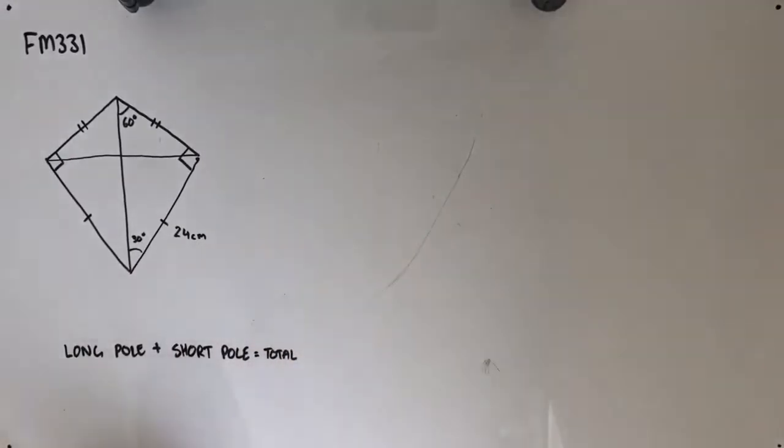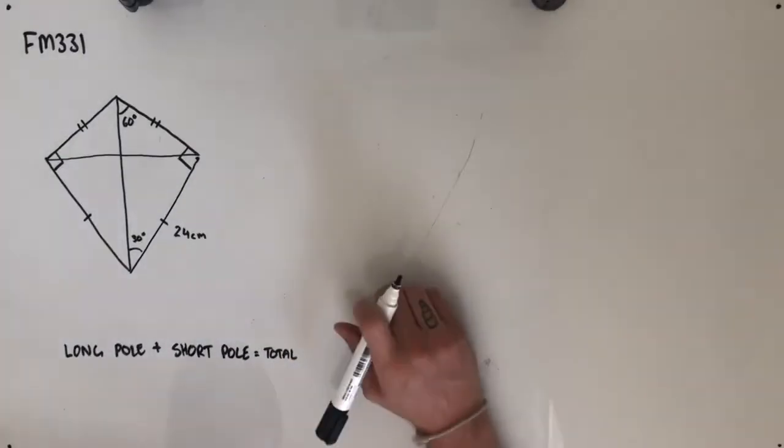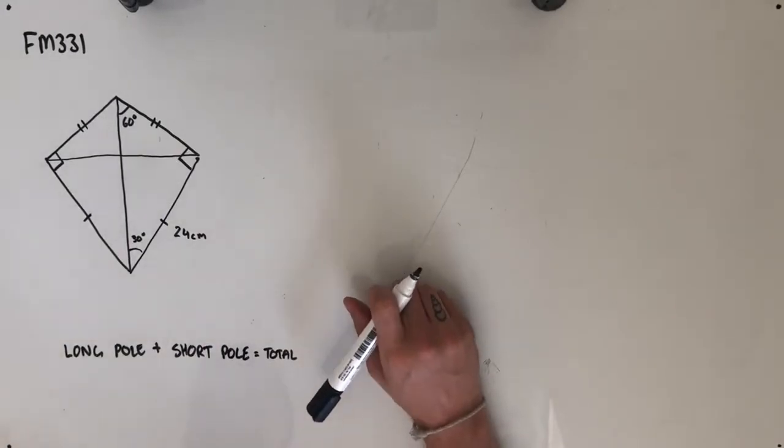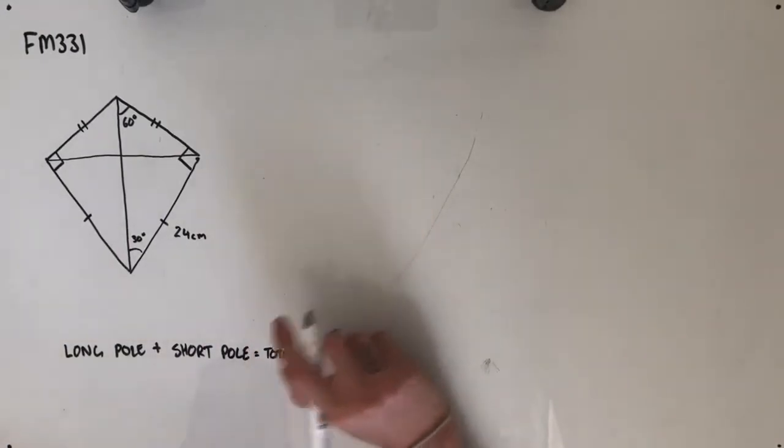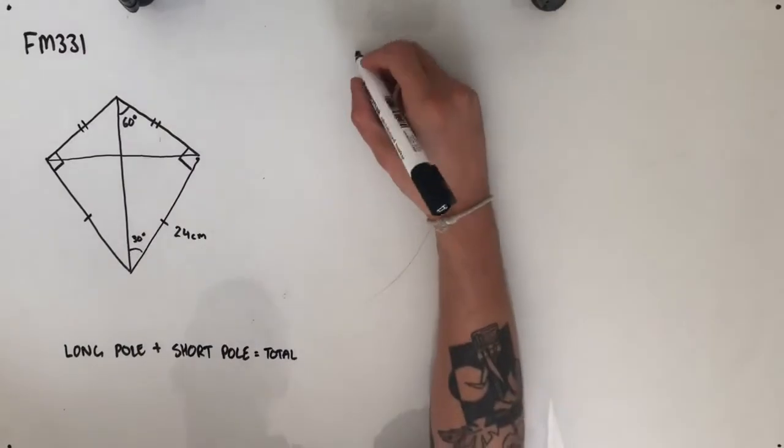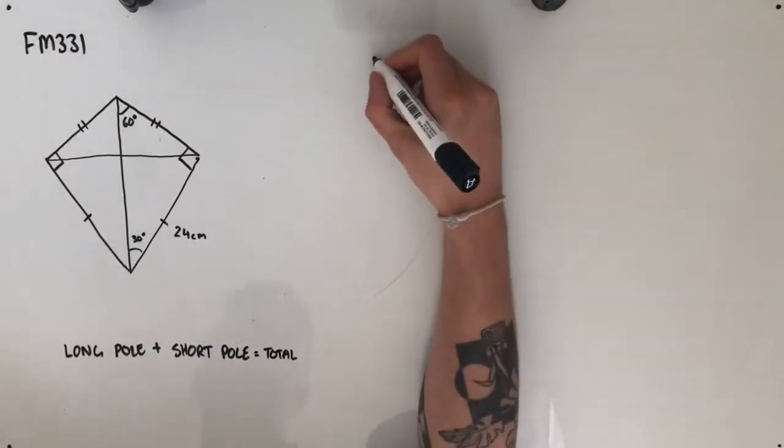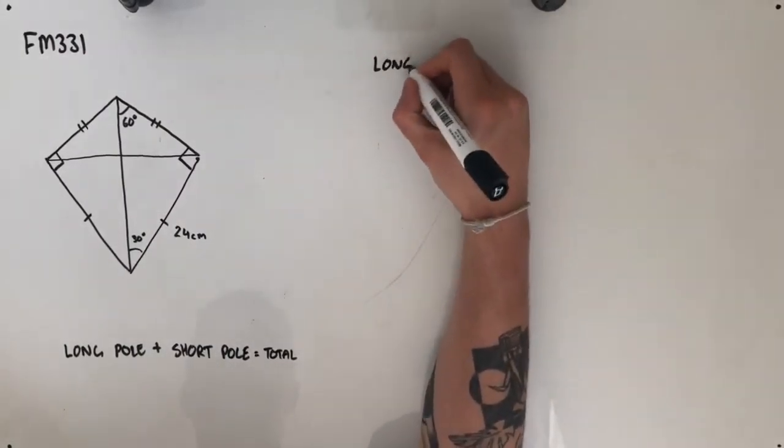The total length of metal pole needed to make this kite. So let's deal with these as two separate problems and then put them together. Starting off with the long pole.